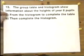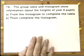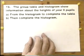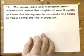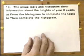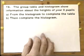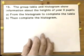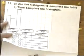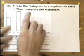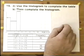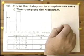We've got a grouped table and a histogram. The group table and histogram show information about the heights of year 8 pupils. We've got to use the histogram to complete the table and then use the completed table to complete the histogram.